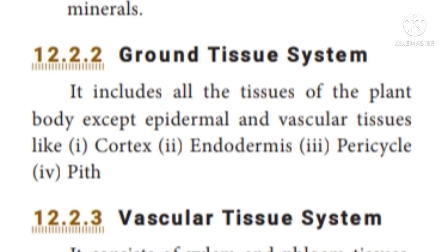The ground tissue system includes cortex, endodermis, pericycle, and pith. This is the ground tissue system.